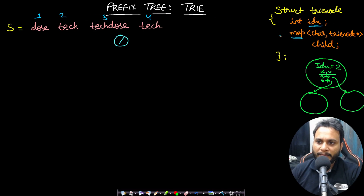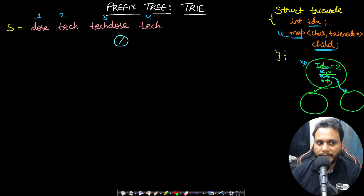I will be using an unordered map — not an ordered map. I will have a child pointer. So the structure of the node stores the index and uses a key-value pair where the key is the character (what is the next character) and the value is the next node — meaning I will be making the tree structure.